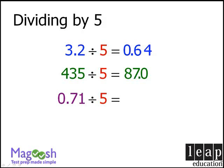One last example. First, we'll take our dividend of 0.71 and double it to get 1.42. And now we'll take our decimal point and move it one space to the left to get 0.142.